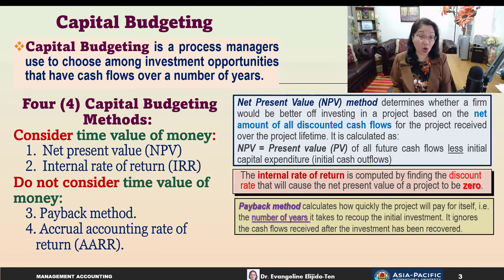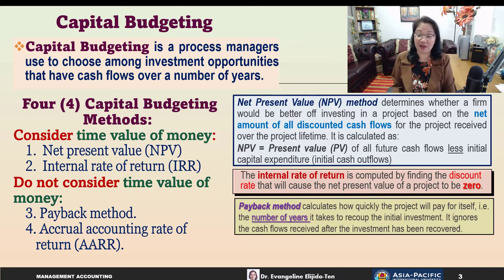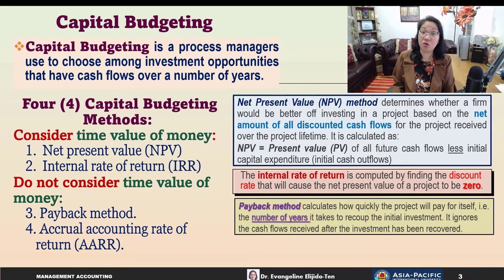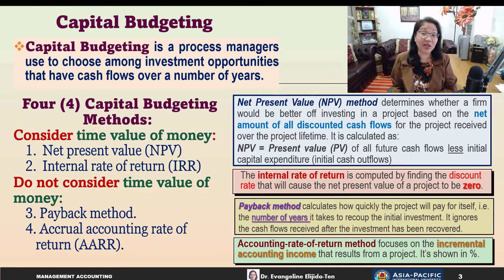The payback method calculates how quickly the project will pay for itself — it's expressed as the number of years. It measures how long it will take for the company to recoup its initial investment, but it ignores any cash flows received after the investment has been recovered. The accounting rate of return focuses on the incremental accounting income that results from a project and is also expressed as a percentage, similar to return on investment.